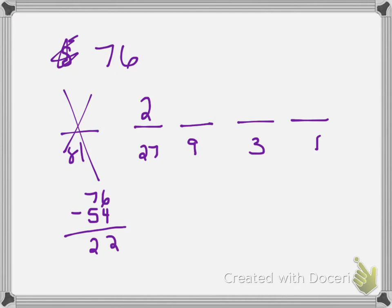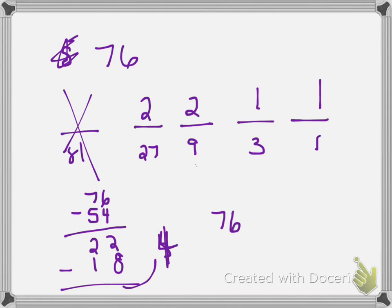So now I can't fit any more 27s in there. Can I fit 9 in there? Sure, and it will go in there 2 times, so I have 18. Subtract that and I get 4. So now I have 1 three and 1 one. So 76 in our number system is equivalent to 2, 2, 1, 1 in base 3.